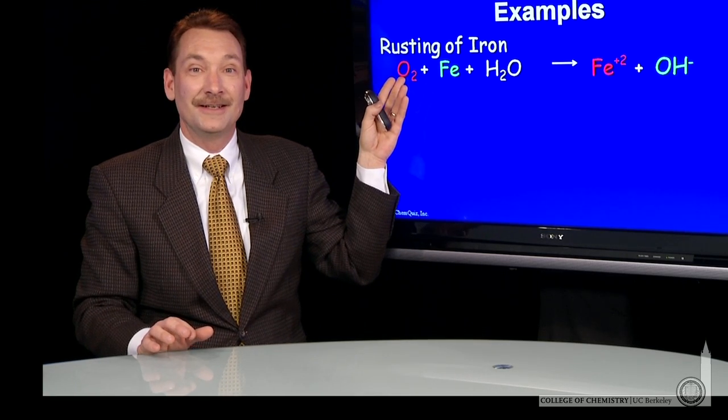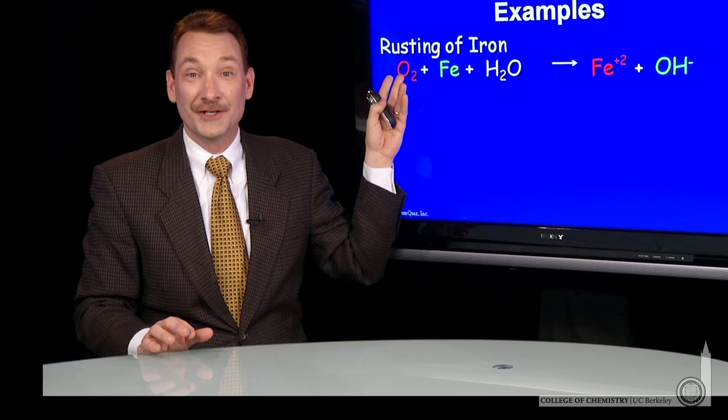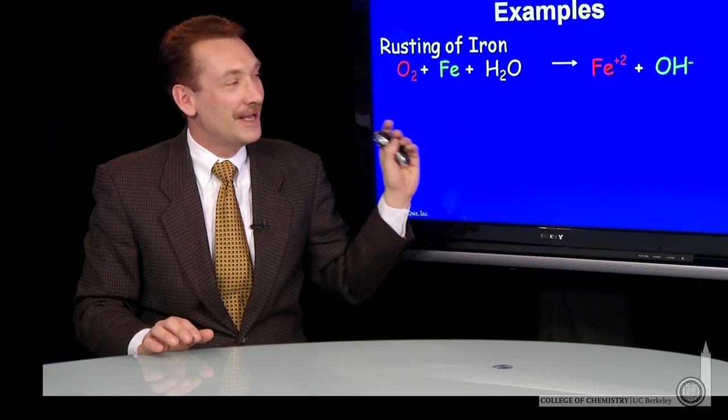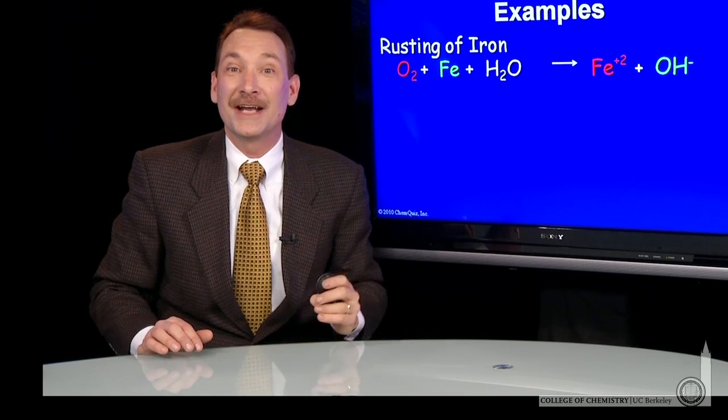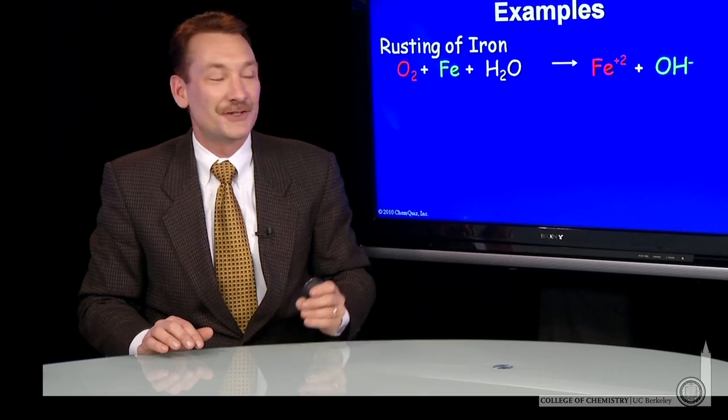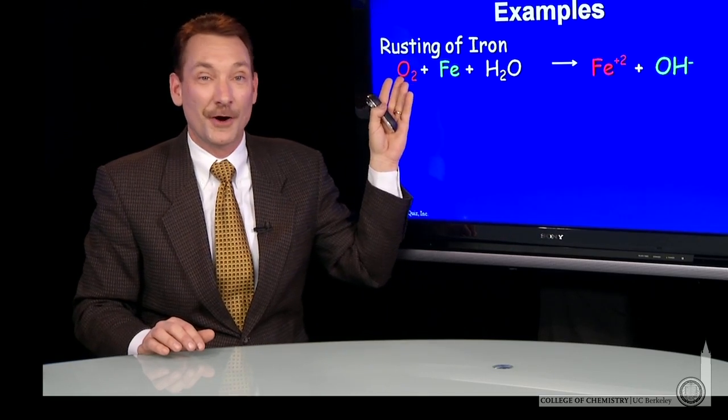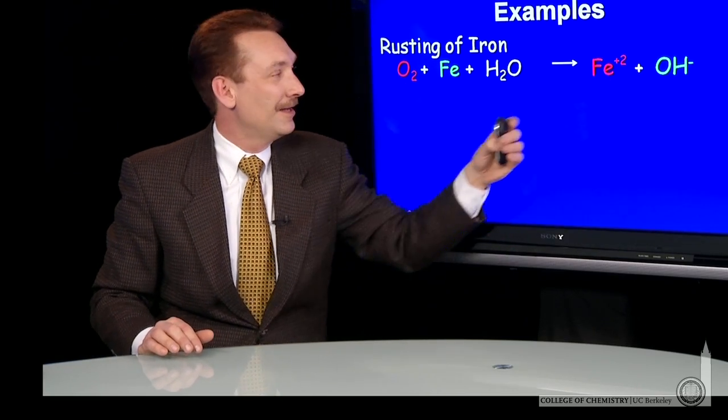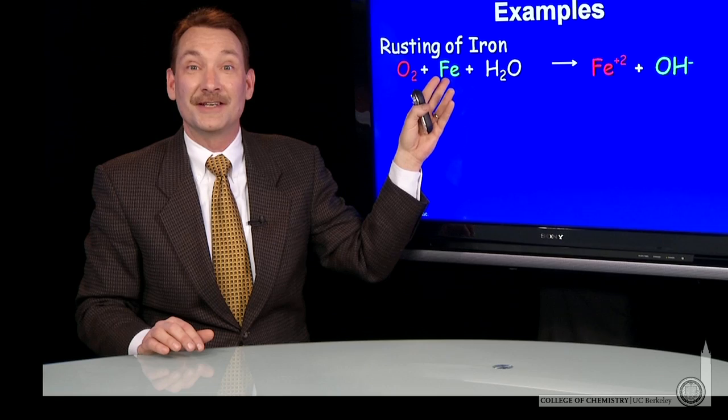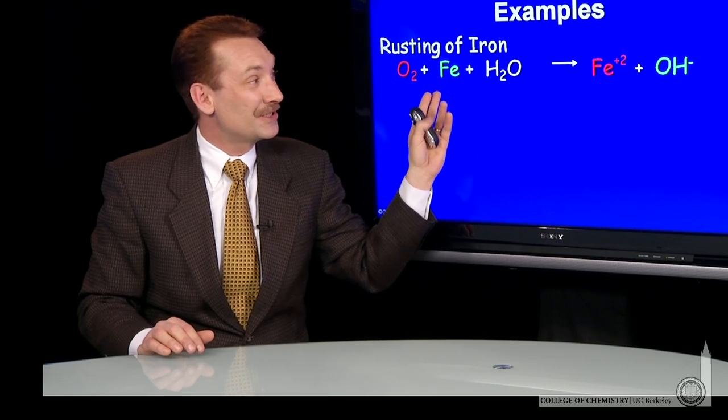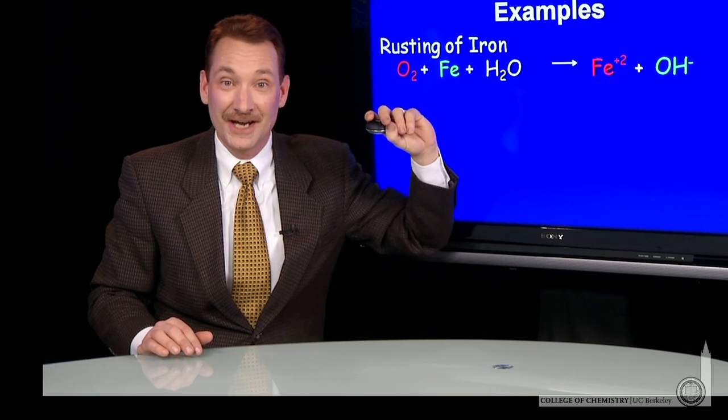Oxygen is in oxidation state 0 in its elemental state, and it goes to oxidation state -2. That's a reduction from 0 to -2. Iron is in its 0 oxidation state. Its oxidation number increases; that's an oxidation to +2.